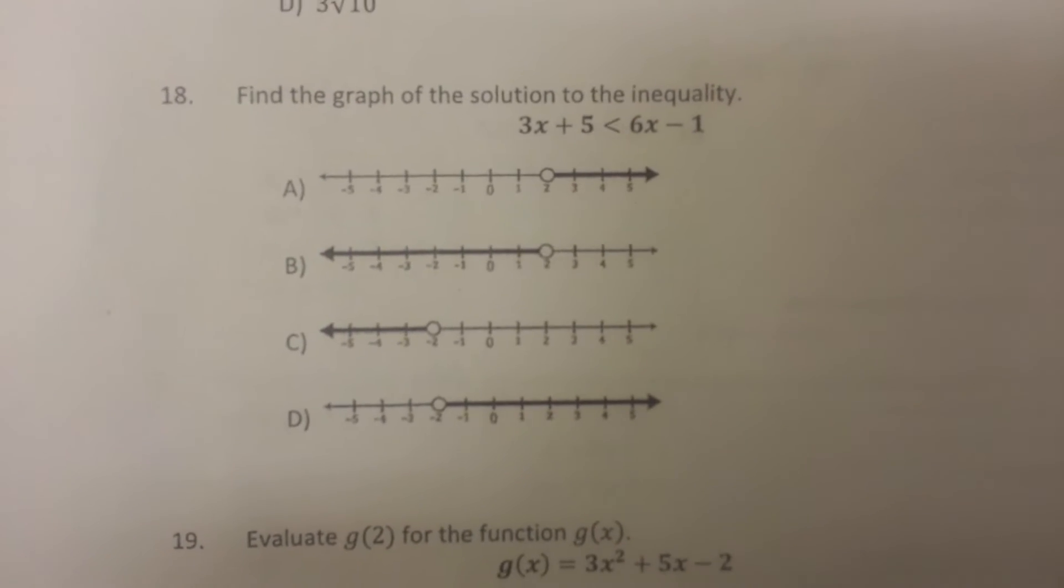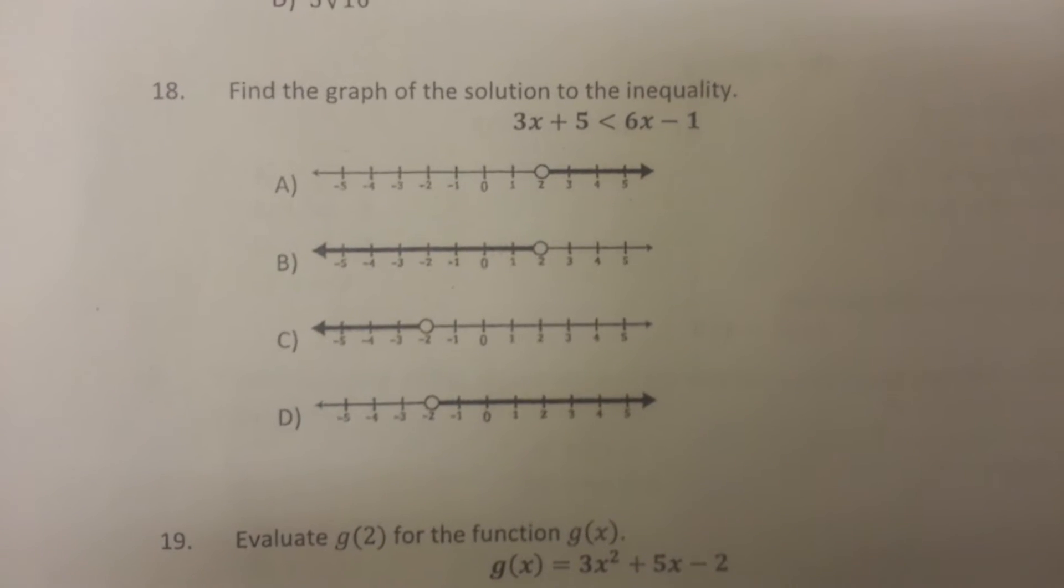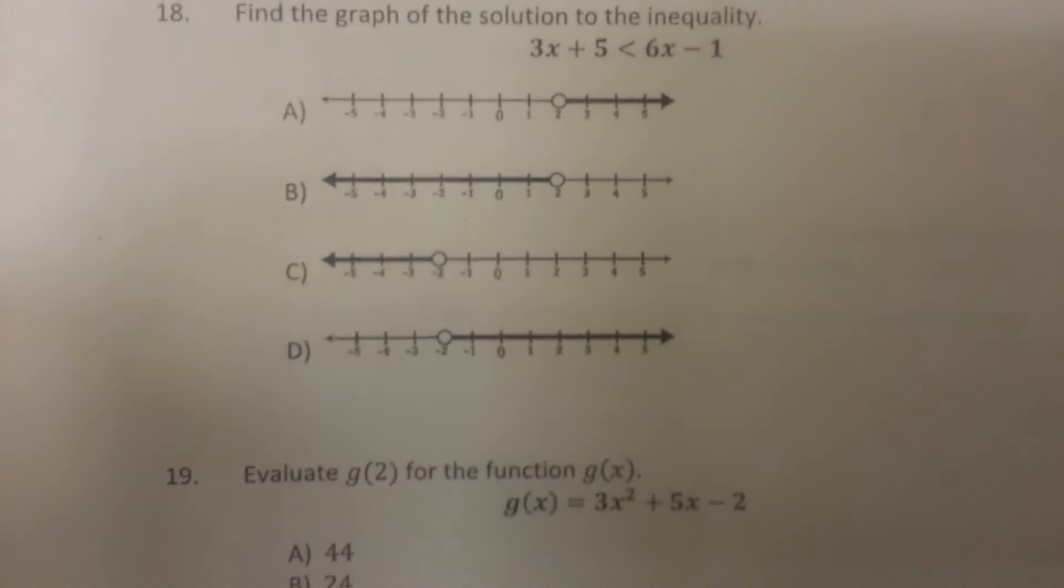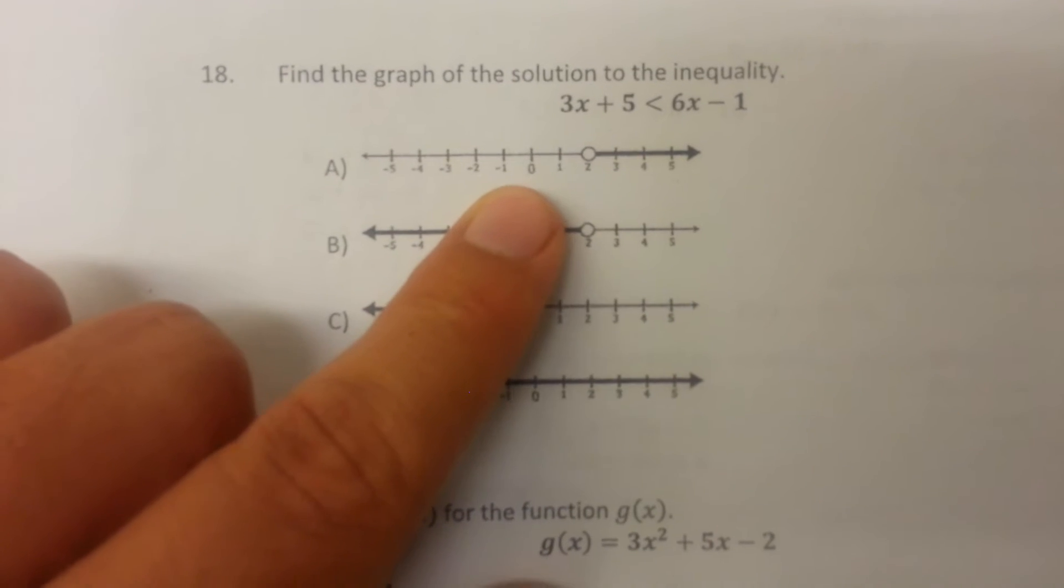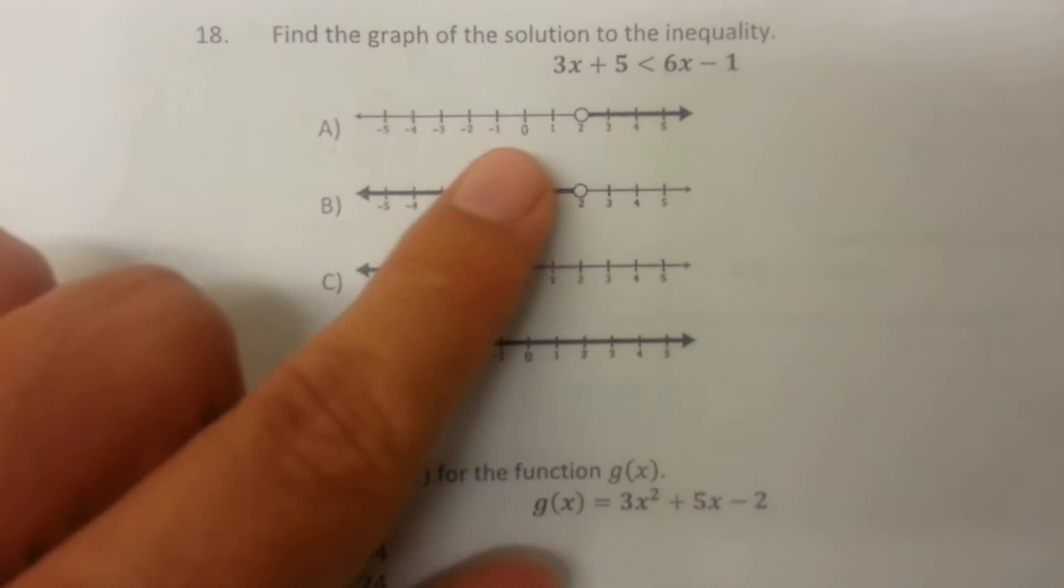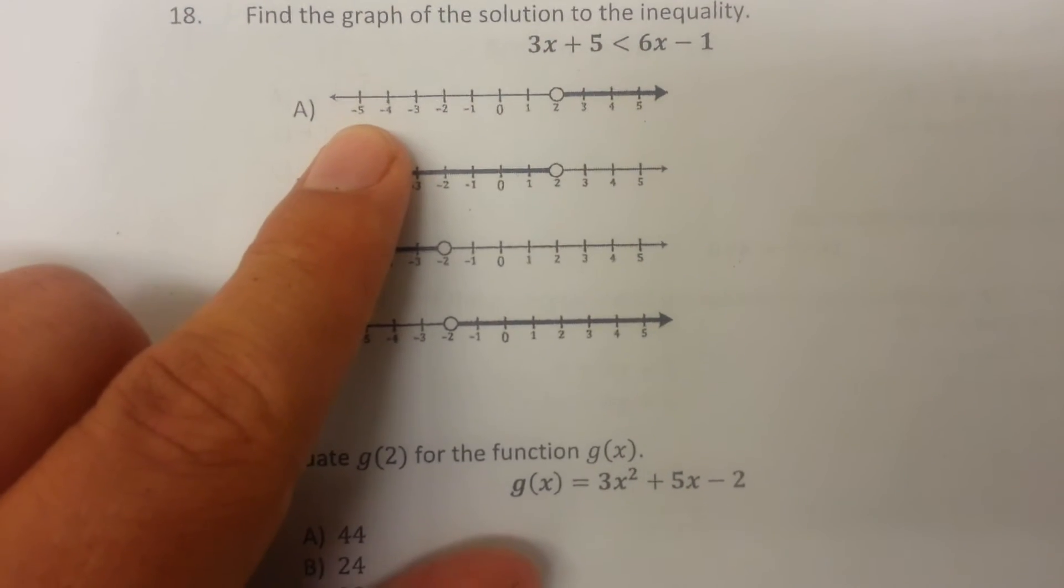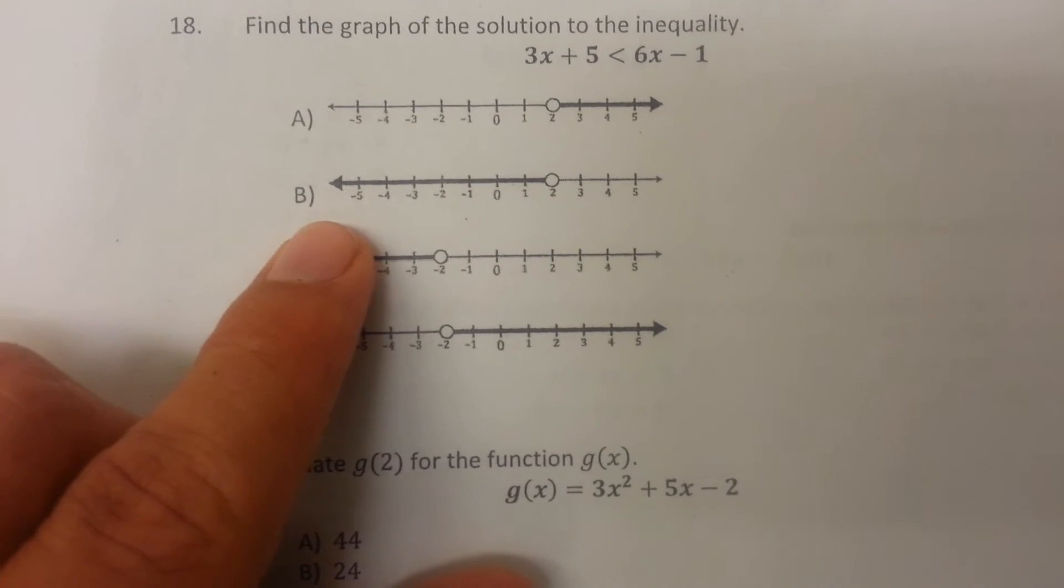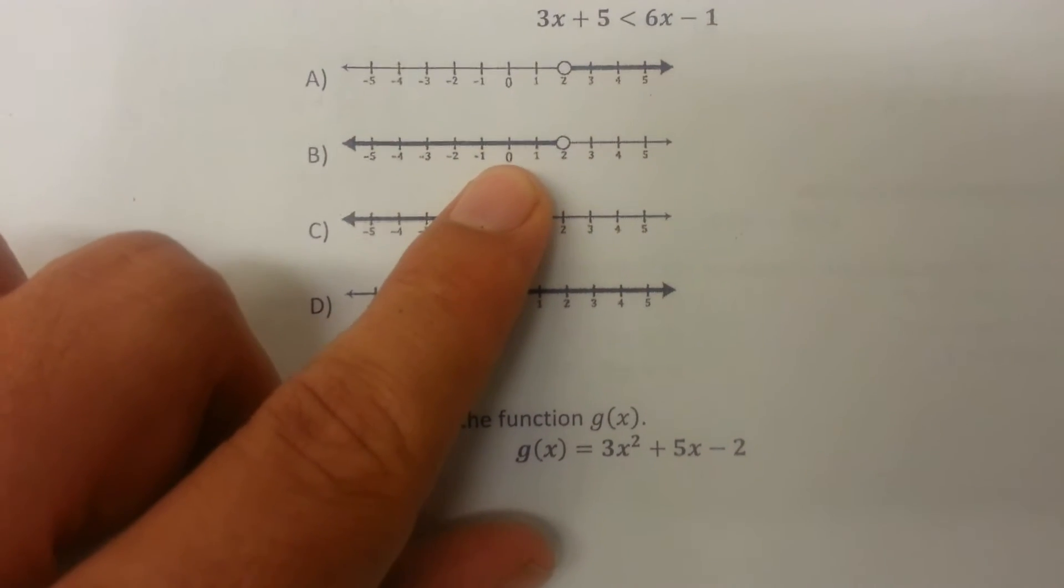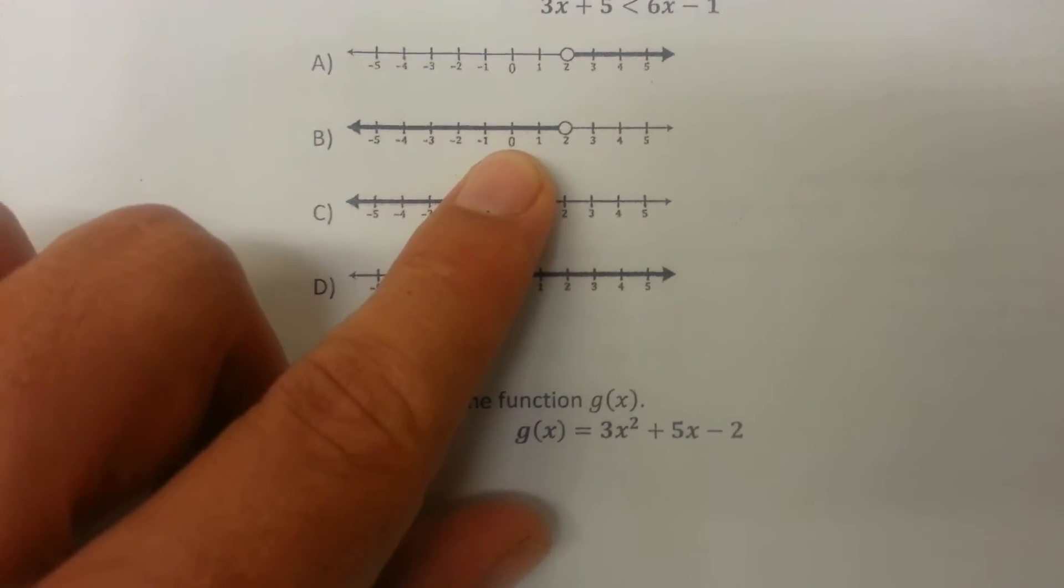Since we plugged in zero and zero didn't work, let's take a look at these four choices, A, B, C, and D. If you look at choice A, zero is not a solution because it's not bolded, so it can still be A. It cannot be B anymore because B has zero bolded, and we know that zero is not a solution.